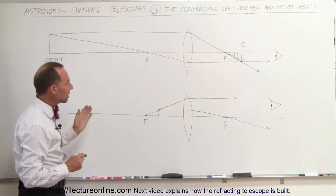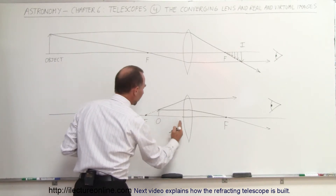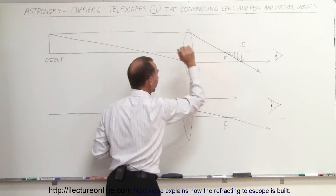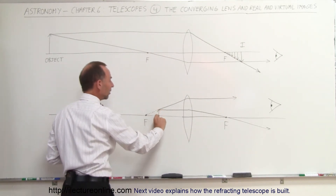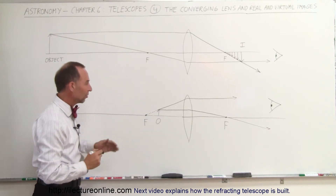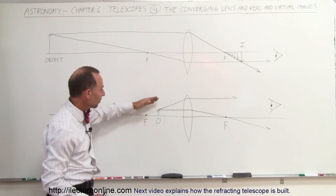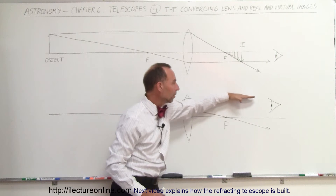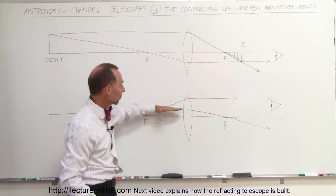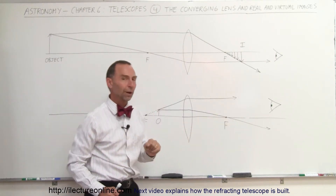What if you put the object closer to the lens than the focal point on the front side of the lens? This is considered the front side of the lens and this is the back side. So here we're placing an object — O for object — right inside the focal point. If you draw a ray from the focal point to the top of the object to the lens, it will refract and continue parallel to the optical axis. If you draw a line parallel to the optical axis, it will go through the lens, refract, and go right through the focal point.